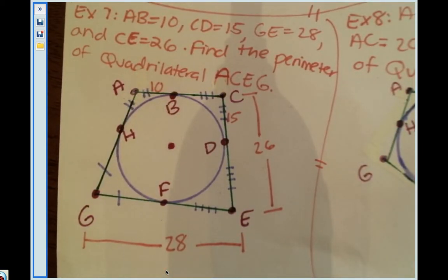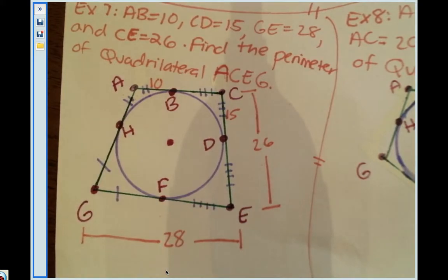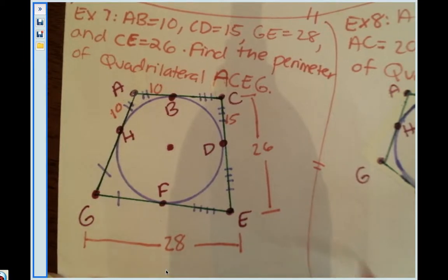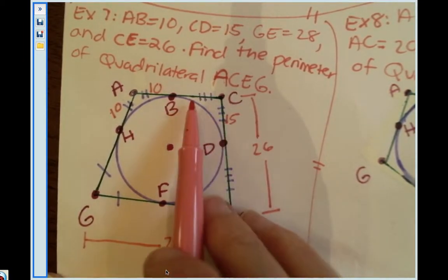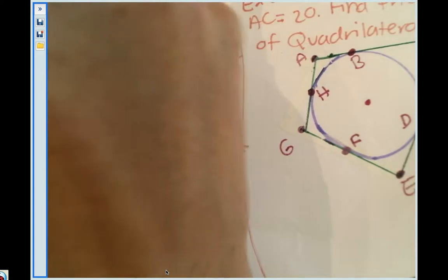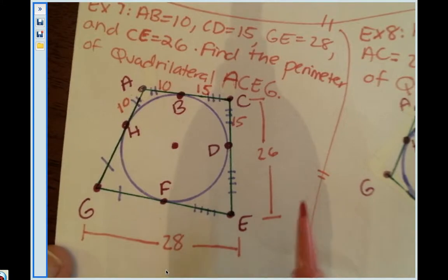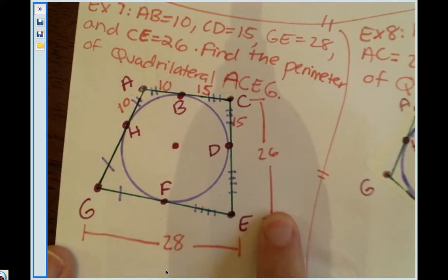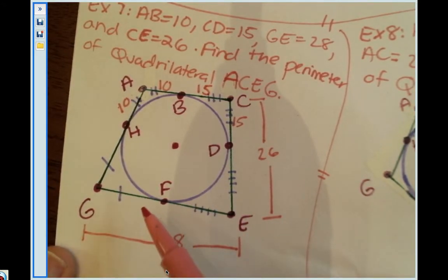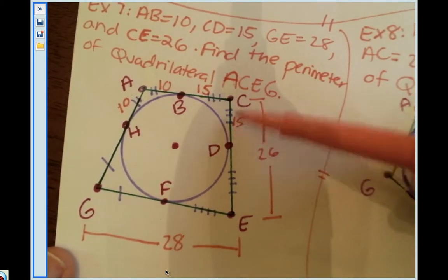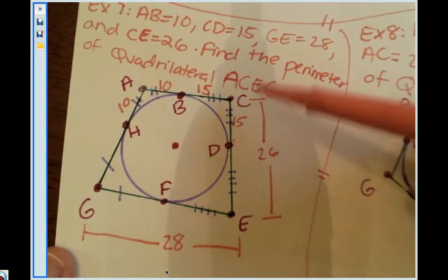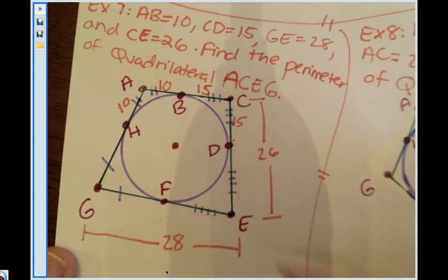So that's going to help me to solve. I know that this is 10, which means that AH is also 10 because they're congruent, which means they're equal. CD is 15, which means CB is also 15. I know this whole side of the quadrilateral and this whole side. So if CD is 15 and CE the whole segment is 26, how could I find DE?